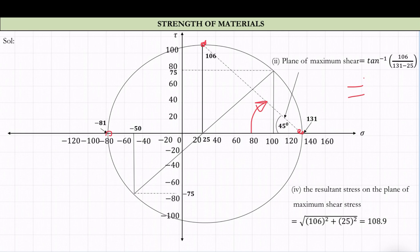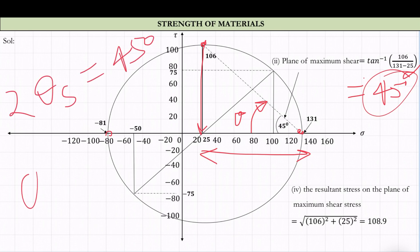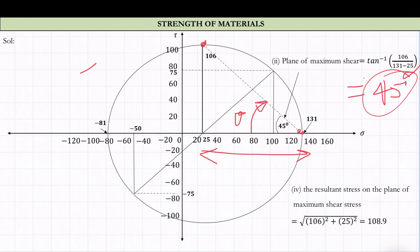If this is theta, then tan(theta) = 106 divided by this length, which is also 106, giving tan(theta) = 1. So theta is 45 degrees, meaning 2*theta_s is 45 degrees, and therefore theta_s is 22.5 degrees. You can verify from the previous problem solved analytically — we got the same value.